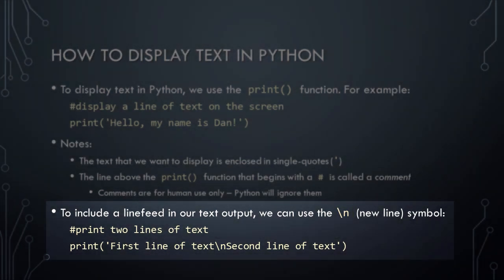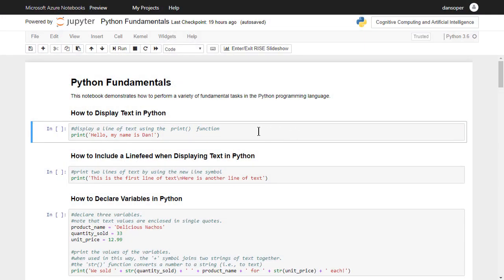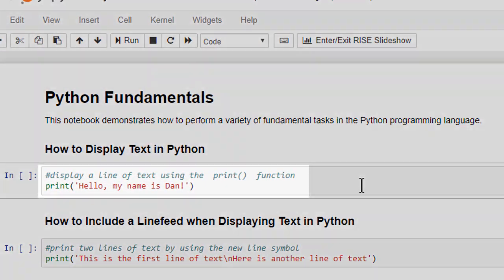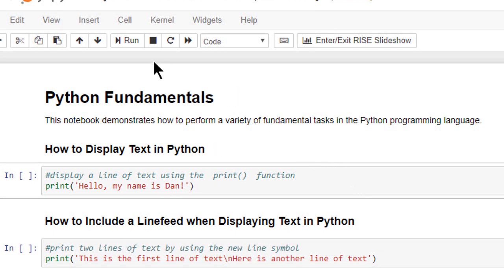Let's see a demonstration of these techniques. The first code cell in this notebook simply uses the print function to print a line of text to the screen. When I click on the run button, the text, hello, my name is Dan, will be displayed on the screen.